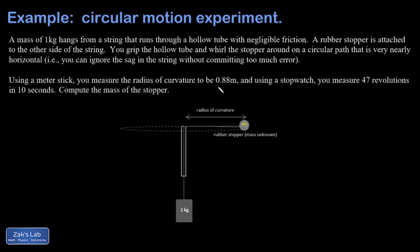I wanted to extract a couple of things from the paragraph. I have a radius of curvature of 0.88 meters, and we've measured 47 revolutions in 10 seconds.